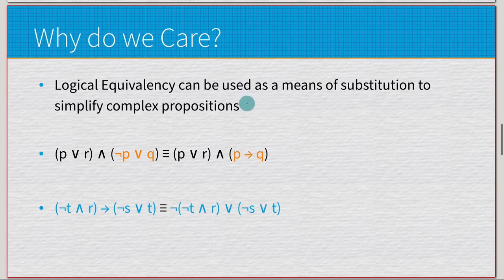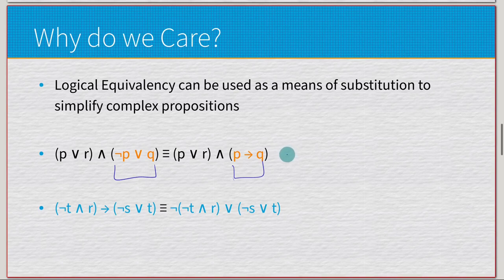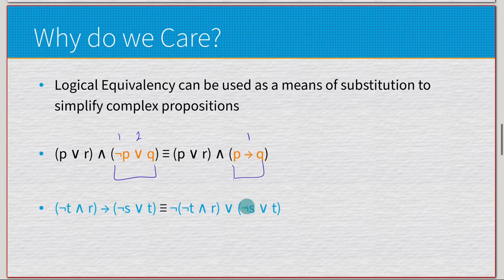Moving on — why do we care about this? It's very helpful for transformation and simplification. We have the expression P disjoined with R conjoined with negated P disjoined with Q, which is logically equivalent to P disjoined with R conjoined with P implies Q. We can transform it into that form. This second version has one operation, whereas the first has two, so it's more efficient to compute.